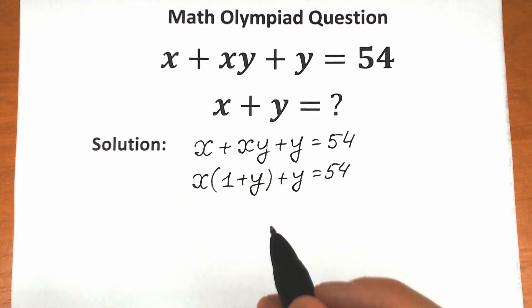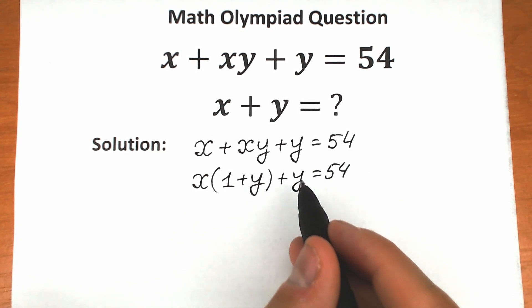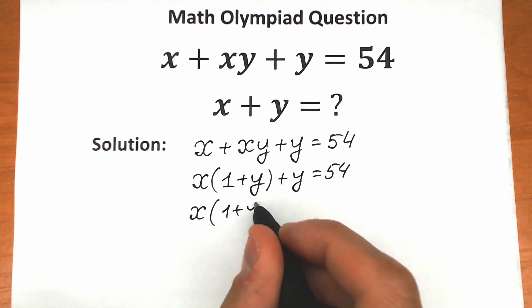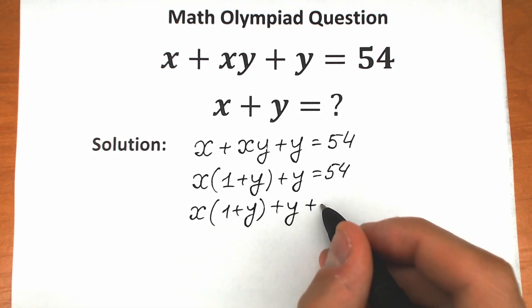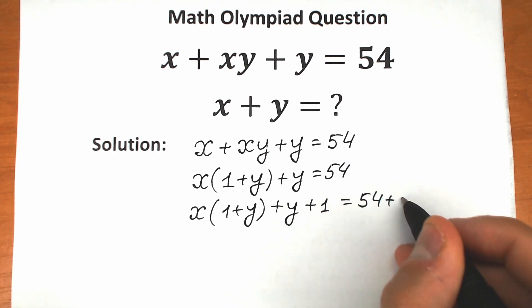What are we going to do next? Let's add 1 to both sides. So we have x times 1 plus y, plus y, and add 1 to this expression and to the right hand side. So we have 54 plus 1.